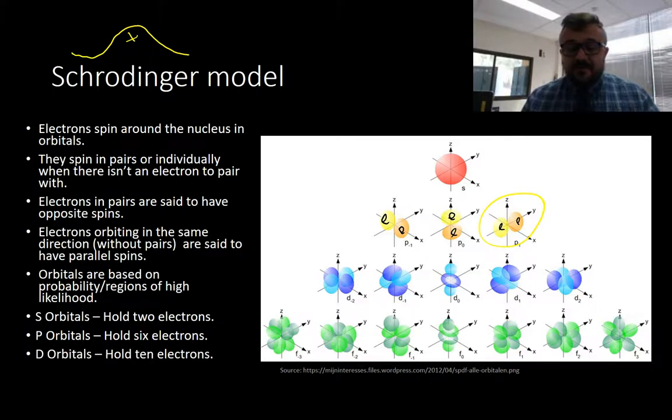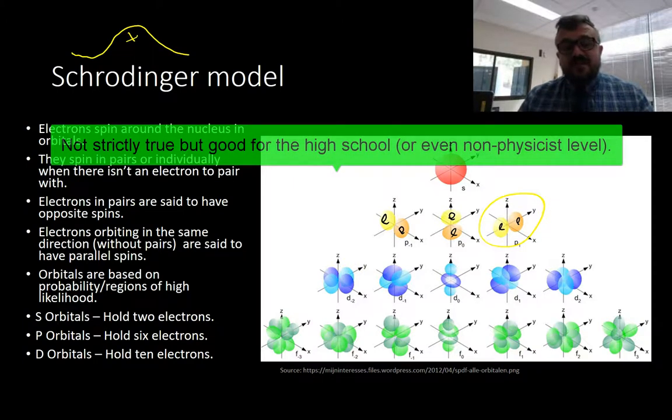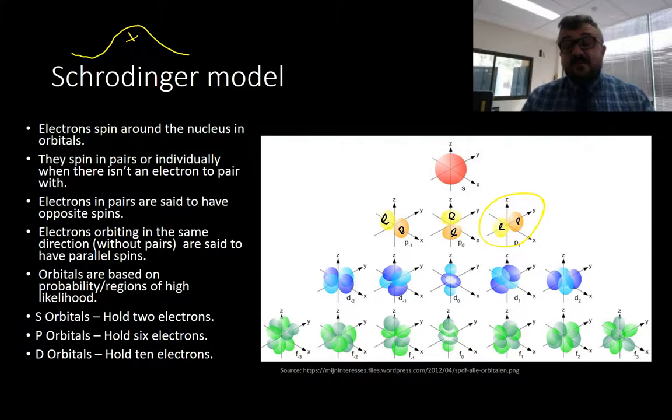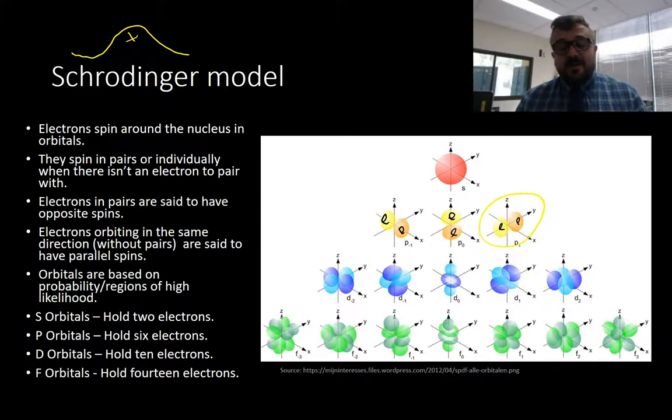When we look at the D orbitals, D orbitals can hold ten electrons. On this diagram, only the light blue ones are the D orbitals. The rest are the surrounding P orbitals and the S orbital in the middle. We've got two electrons there, two electrons there, all up to ten electrons. The F orbitals hold 14 electrons all up with seven separate orbitals. It's complex, much trickier than the previous version.